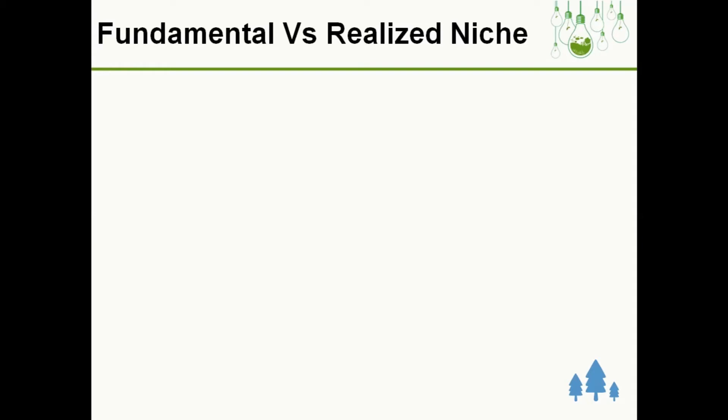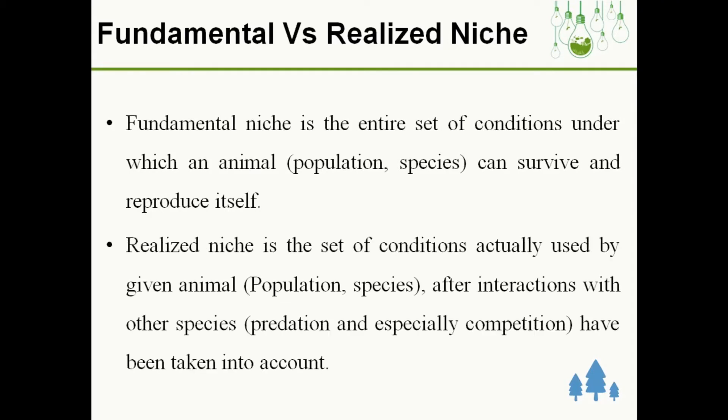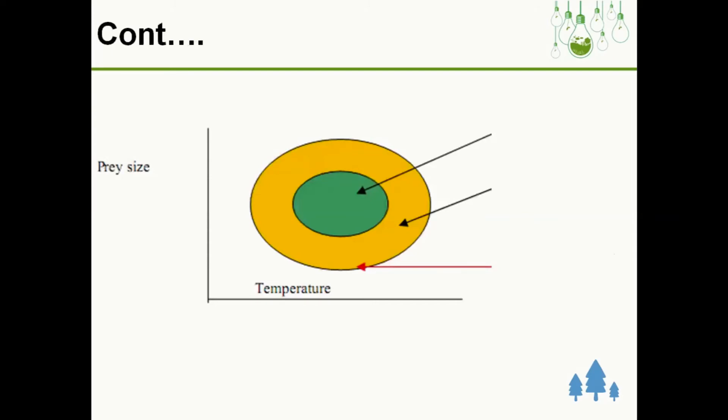There are two different types of niche: fundamental and realized. Fundamental niche is the entire set of conditions under which an animal can survive and reproduce, whereas realized is the set of conditions actually used by a given animal after interaction with other species. Realized niche is post-competitive.